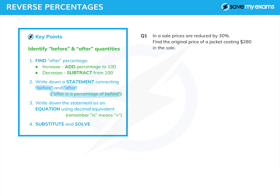That statement is going to read: after is a percentage of before, using the percentage we've just found. Then we're going to translate that statement into an equation using the decimal equivalent of the percentage — so 95% would be 0.95, being 95 over 100 — remembering that 'is' means equals. Then we simply substitute in the numbers and solve the resulting equation.